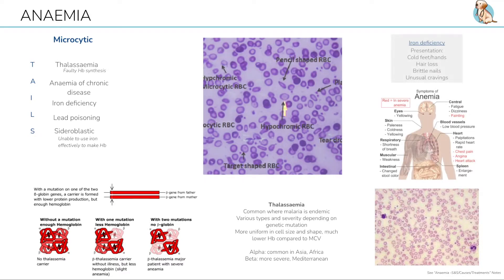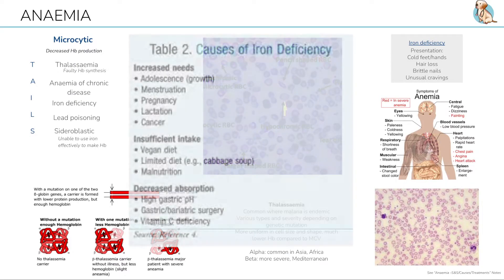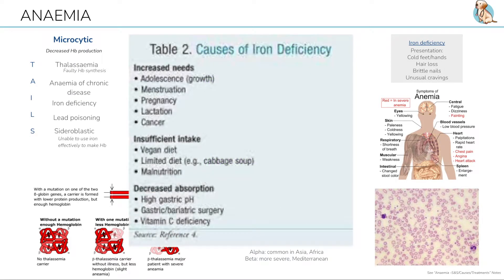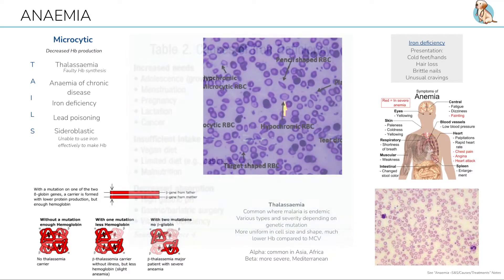Iron deficiency anemias occur where there is increased demand, such as pregnancy, chronic bleeding such as heavy periods or peptic ulcers, or inadequate absorption such as in gastric bypass surgery.